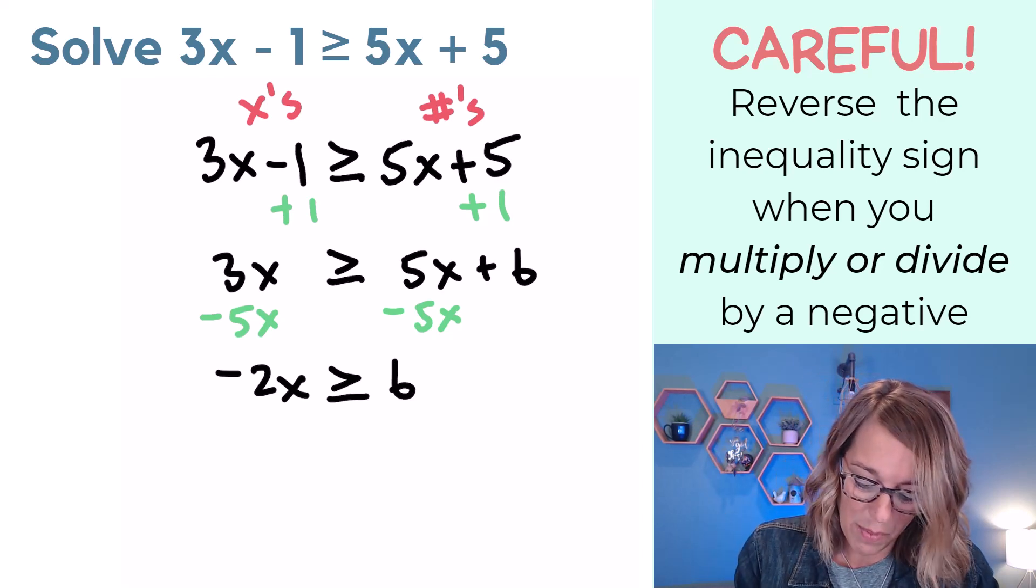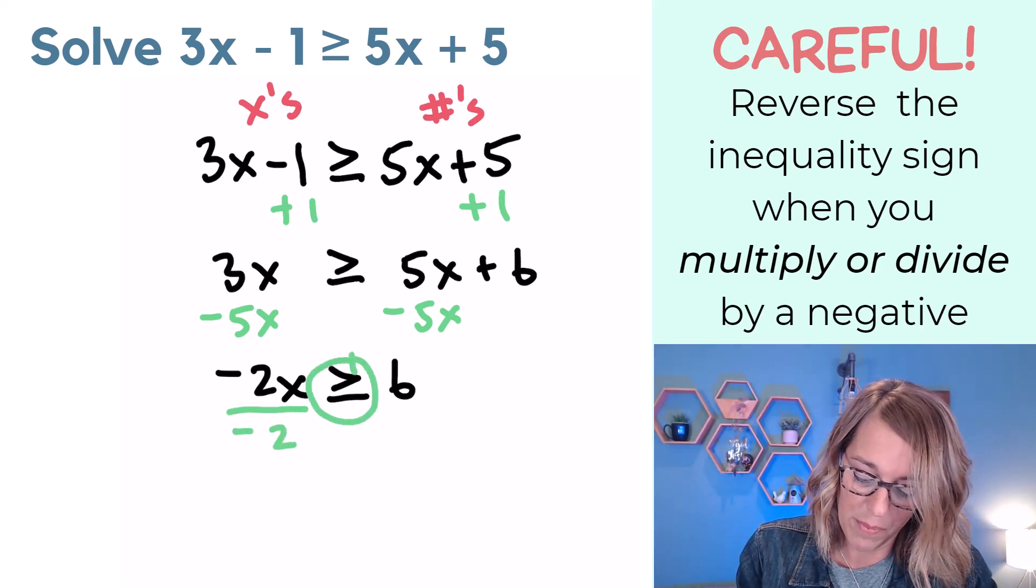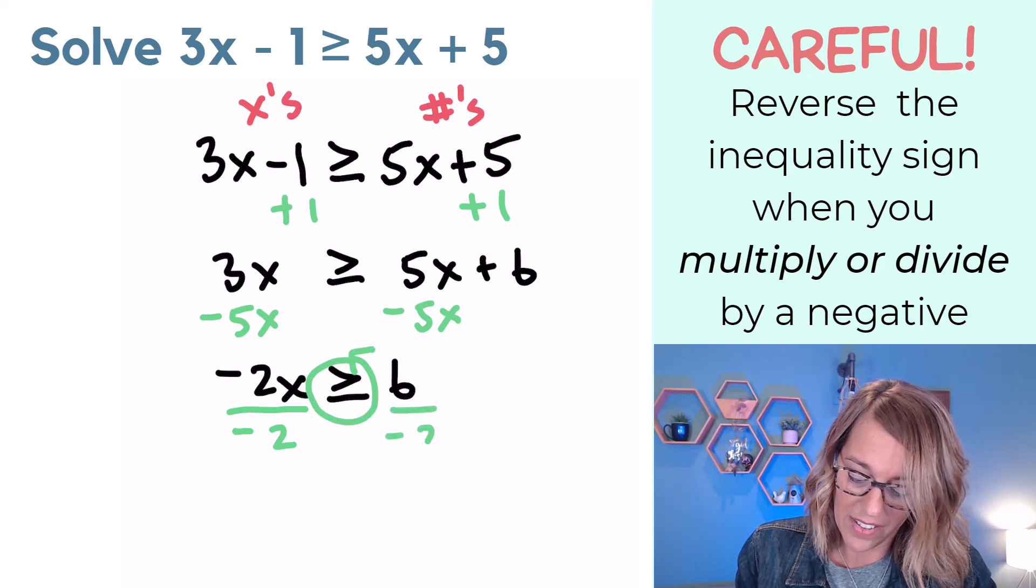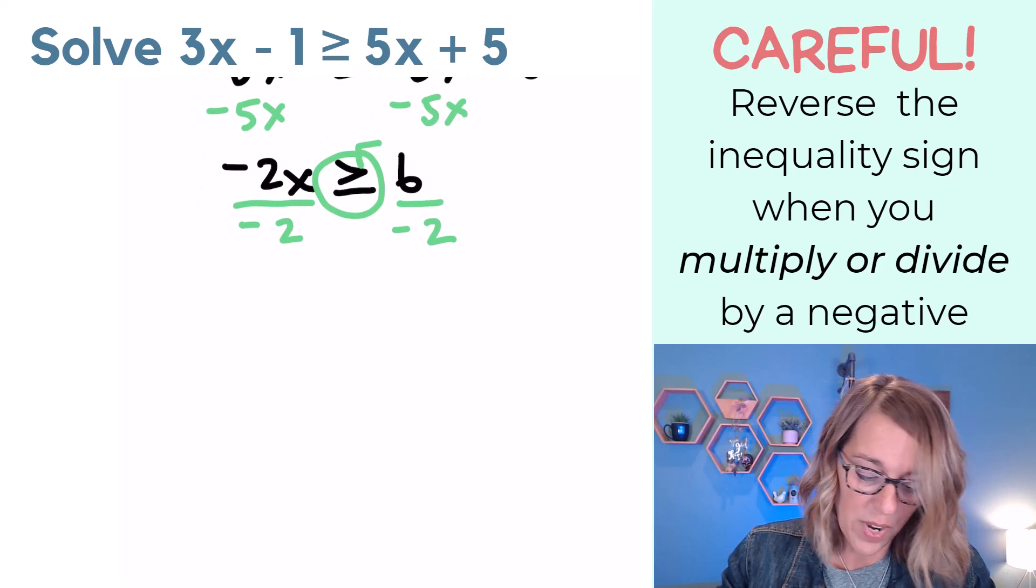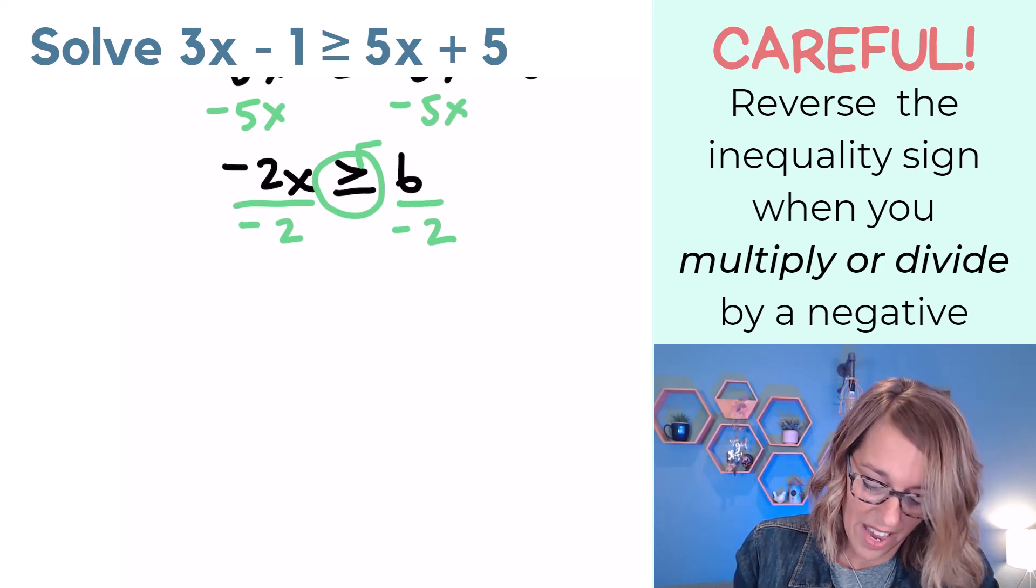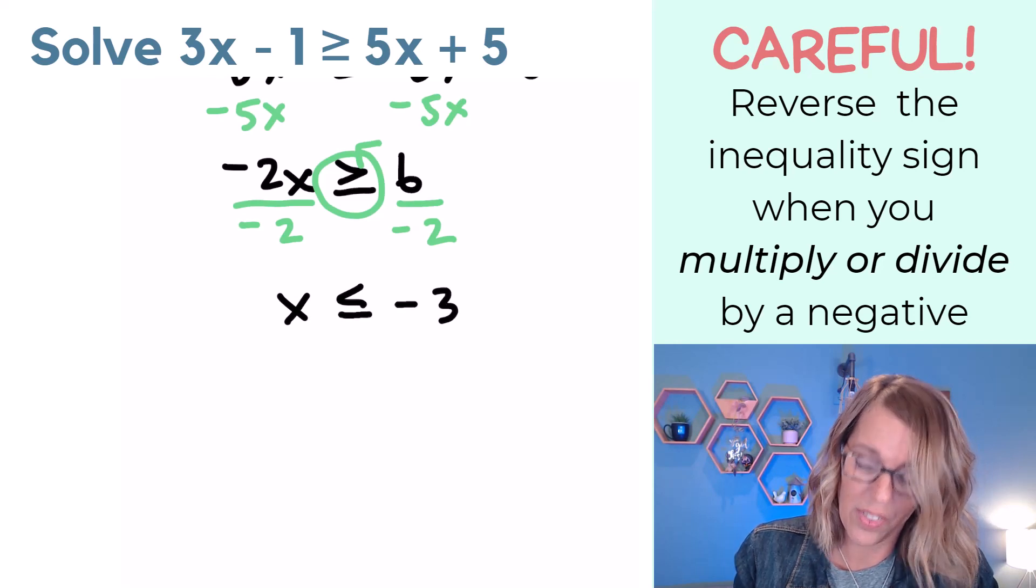So I'm going to divide by a negative 2. I'm going to reverse my symbol and divide that 6 also by a negative 2. So we end up with x now less than or equal to a negative 3.